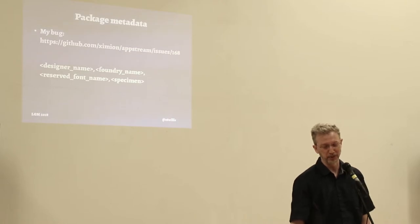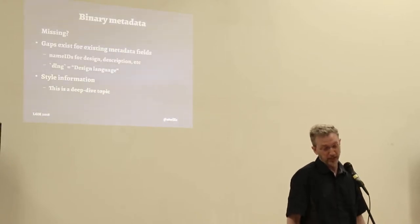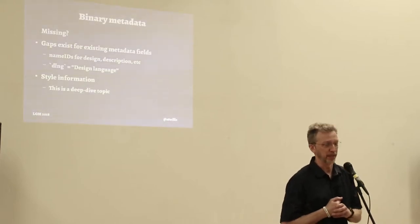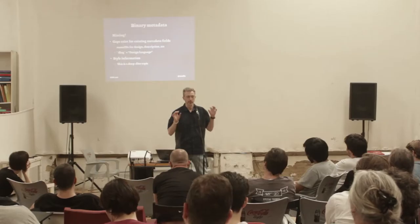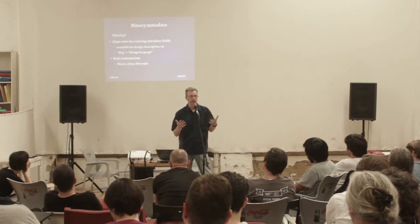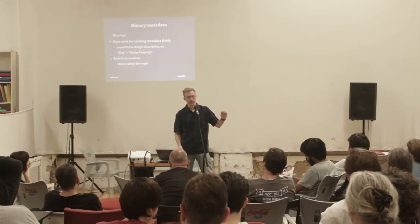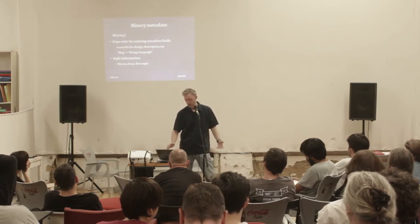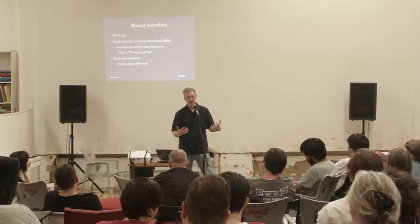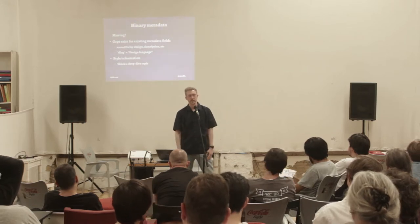If you visit the AppStream issue URL you'll see no comments — I probably just need to push more there. There's also binary metadata that many open fonts are simply missing. I heard a talk a couple of weeks ago about the 'dlng' tag — the design language tag — which tells you what the intended first language of a font is. A lot of non-Latin fonts include a Latin alphabet for compatibility, but if you don't know which language is primary, you don't know what to show in the preview string. There's also style information like PANOSE, which is meant to categorize style, though I'm not convinced it works well across cultures.